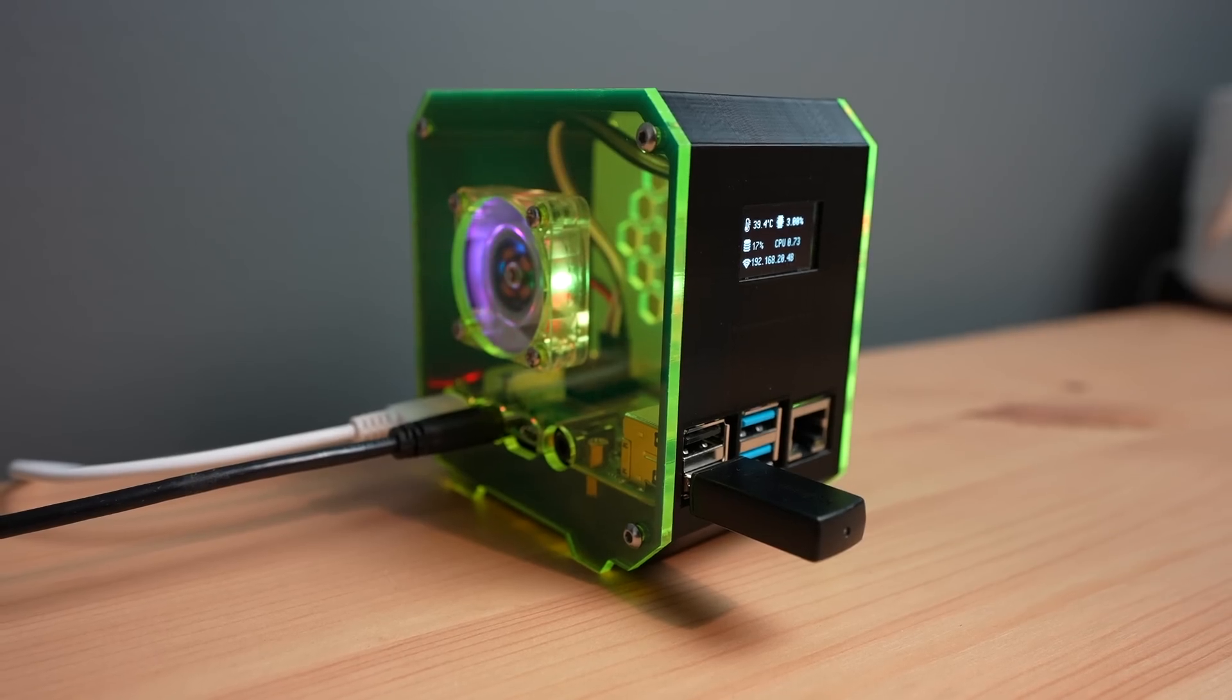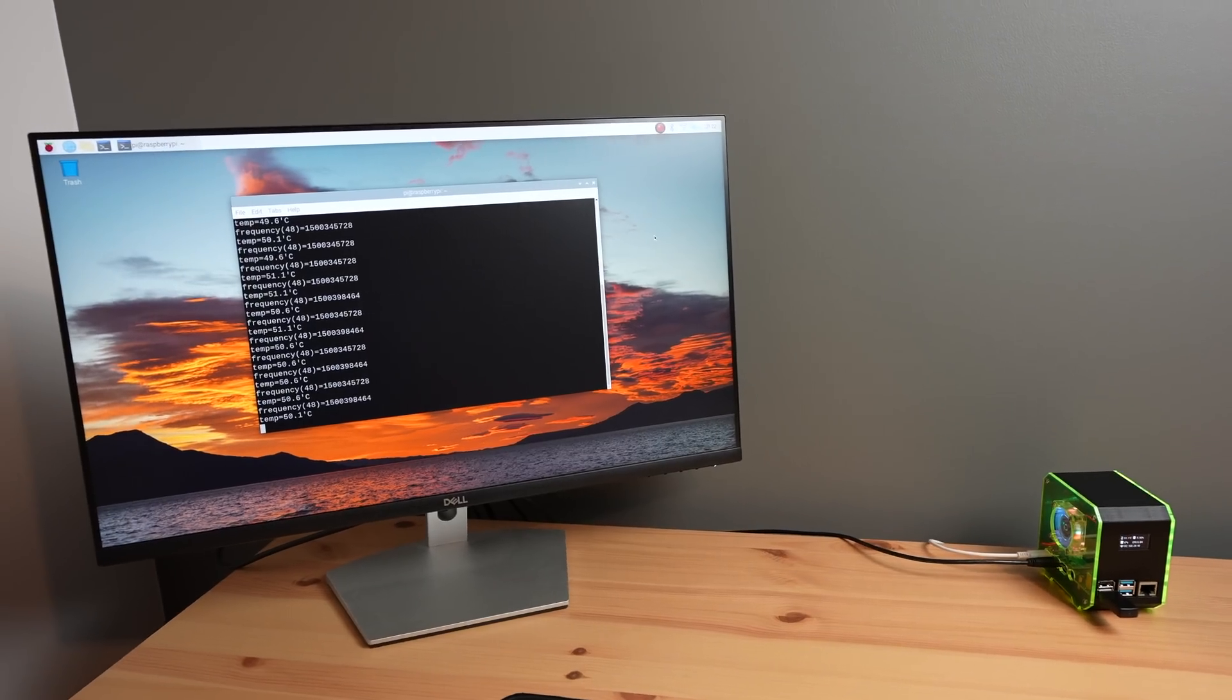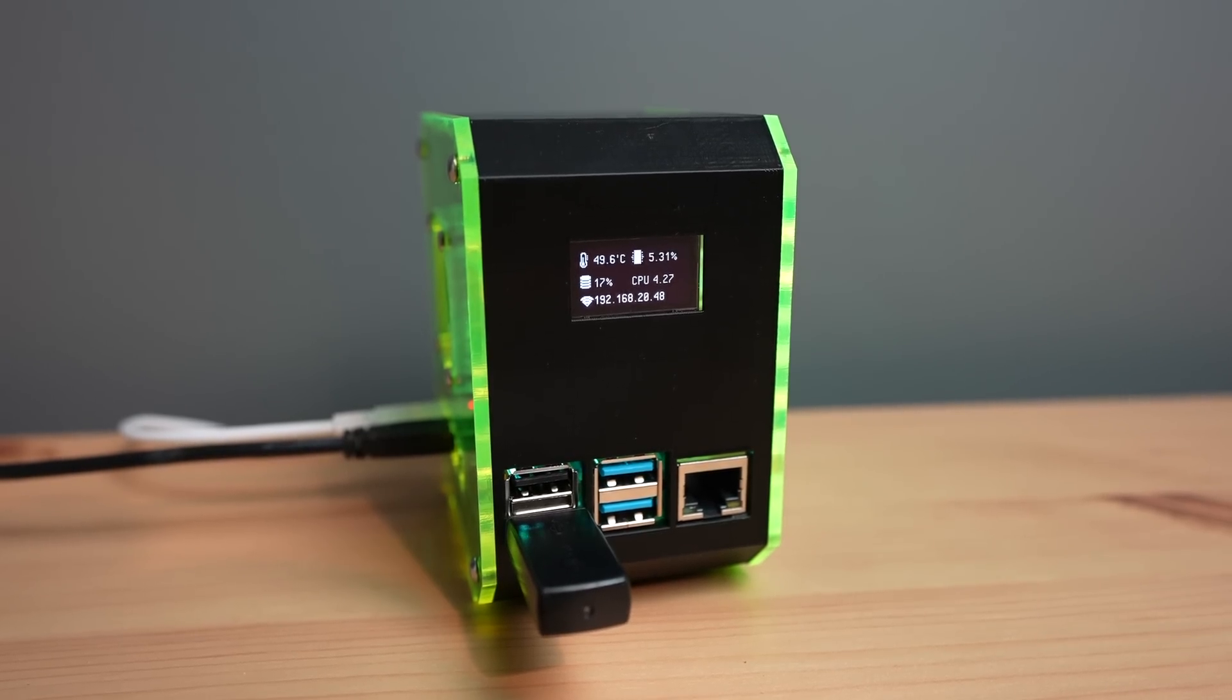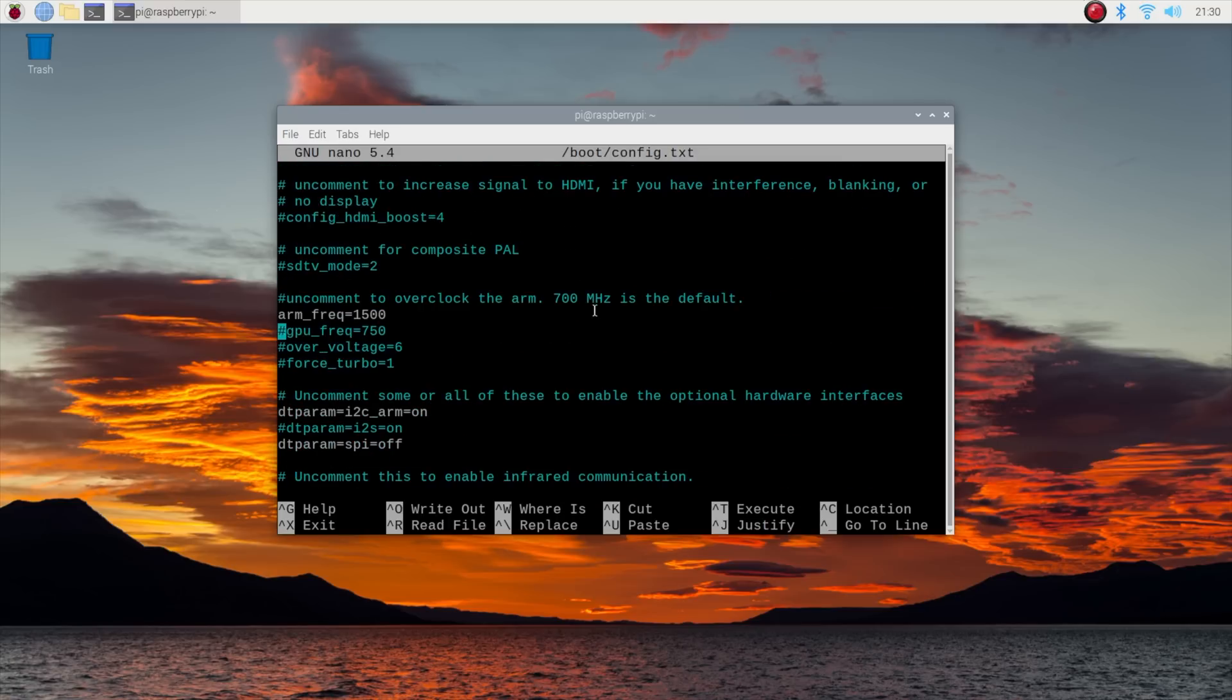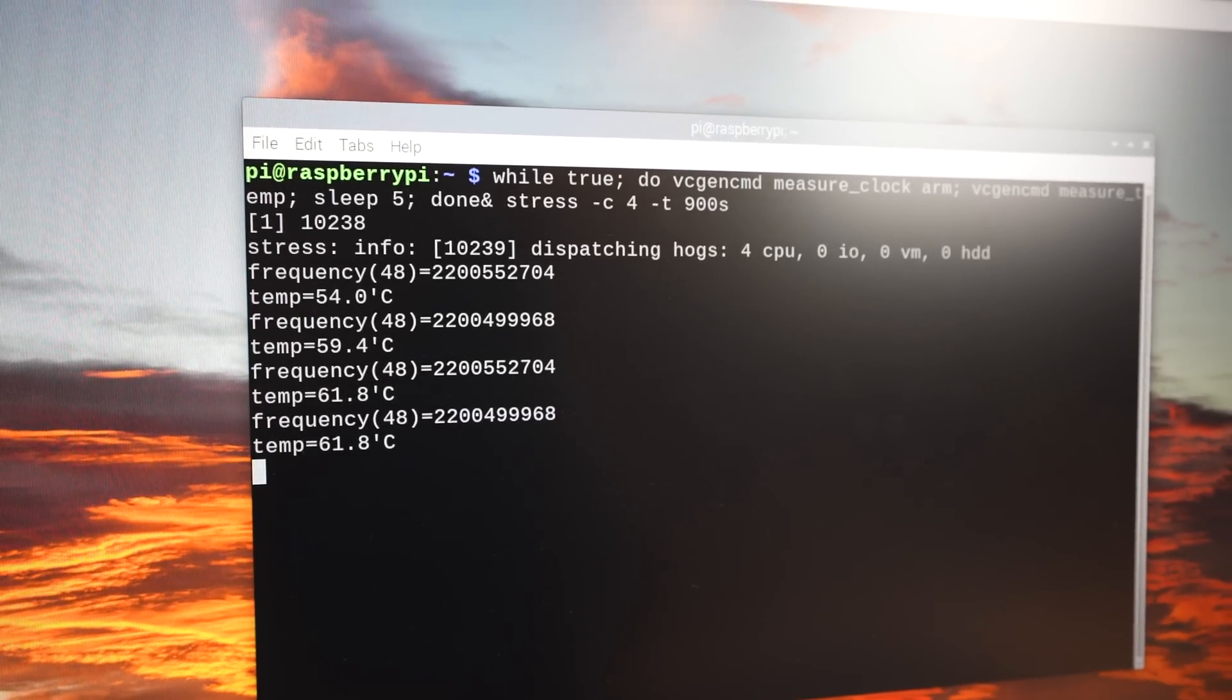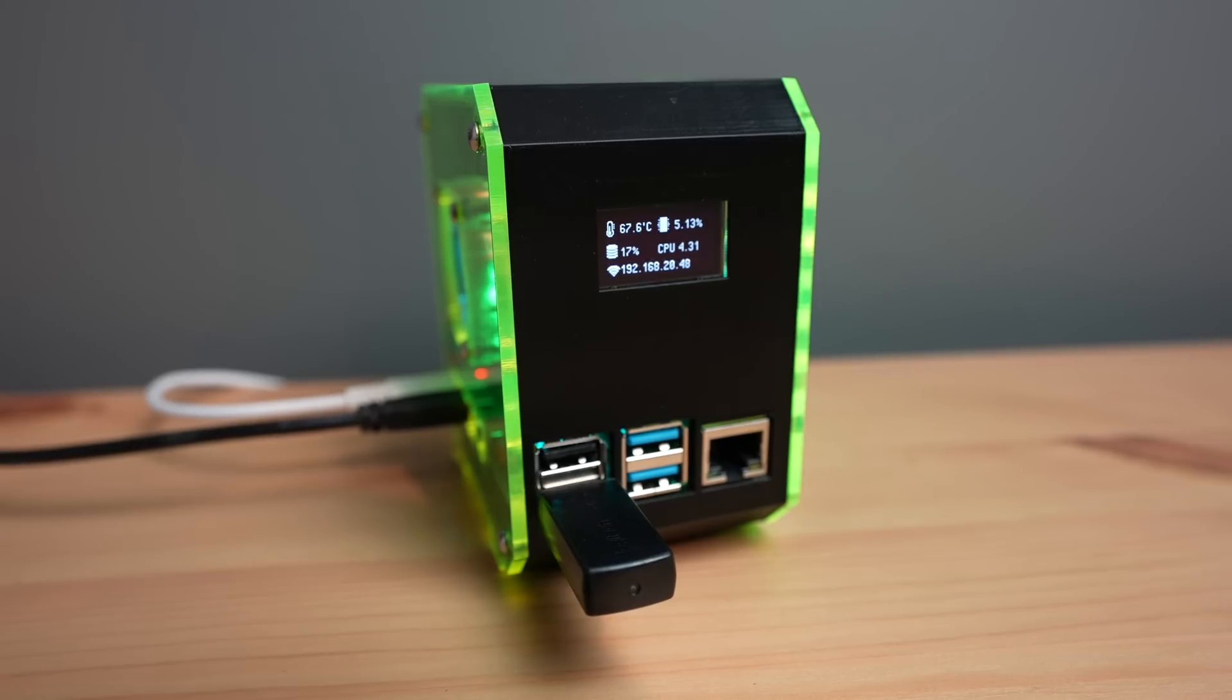I booted it up and ran CPU burn with the CPU clock frequency at the standard 1.5 GHz. The temperature actually stayed lower than I expected and stabilised at around 53 degrees after 3 minutes. I then overclocked the Pi to 2.2 GHz and ran the test again. This resulted in significantly higher running temperatures but still did not thermal throttle, and it stabilised at around 75 degrees after 4 minutes.